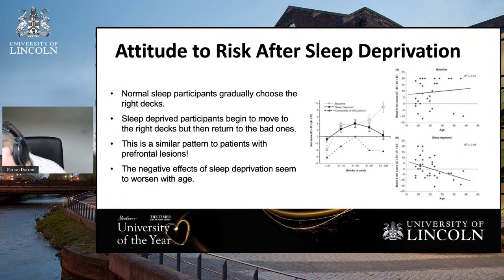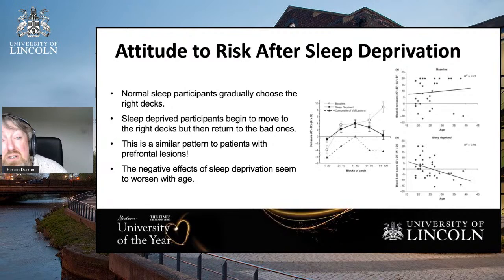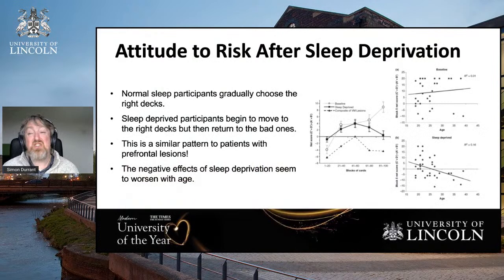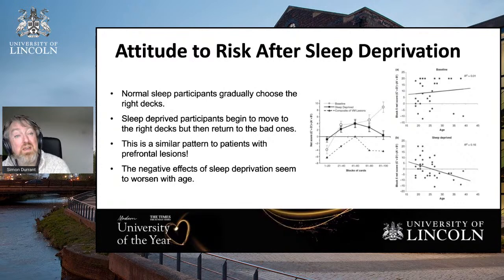What happens after sleep deprivation versus normal sleep? Looking at three graphs: the white circles are baseline — people who are not sleep deprived — and over time they learn how things work and tend towards choosing the lower-risk decks, getting better. By contrast, people who are sleep deprived — the black squares — get better for a while but then start taking risks to increase their income, actually getting a little worse again. That pattern follows people who have lesions in the prefrontal part of the brain, which controls decision making and risk.